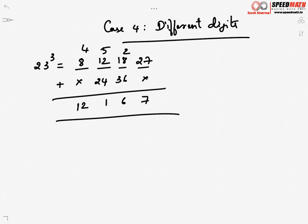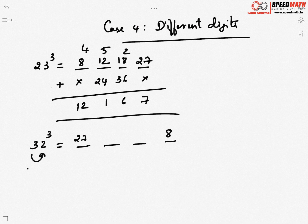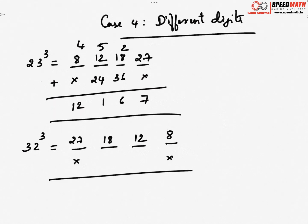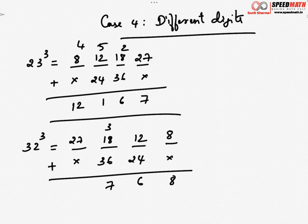One more example: 32³. Four positions: first position is 3³ = 27; last position is 2³ = 8. Second position: 3² = 9, and 9 × 2 = 18. Third position: 2² = 4, and 4 × 3 = 12. Step 2: leave first and last, double the middle — 18 doubled is 36, 12 doubled is 24. Step 3: add — 8 stays; 12 + 24 = 36 (write 6, carry 3); 18 + 3 + 36 = 57 (write 7, carry 5); 27 + 5 = 32. So 32³ = 32768.